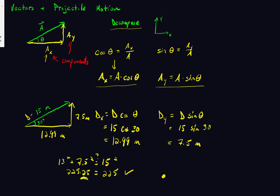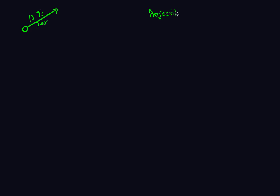What I really wanted to do is tie this back to velocity and acceleration and eventually force. Suppose I have an object given an initial velocity of 13 meters per second at an angle of 20 degrees. This is projectile motion — that's just things that are moving without propulsion, meaning no thrusters, nothing propelling it.